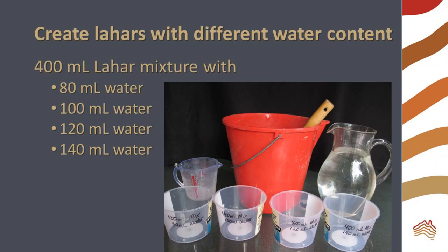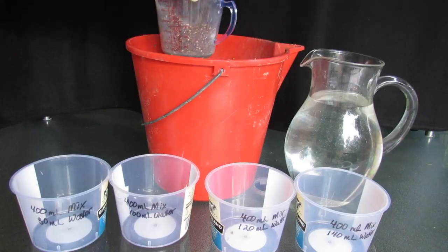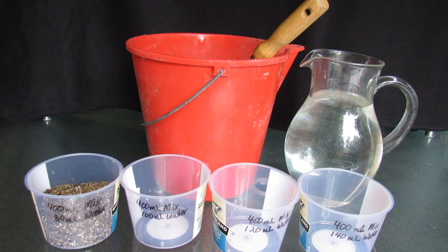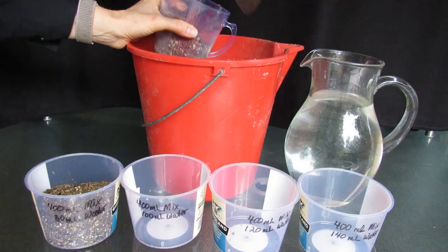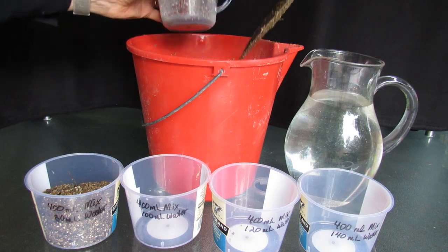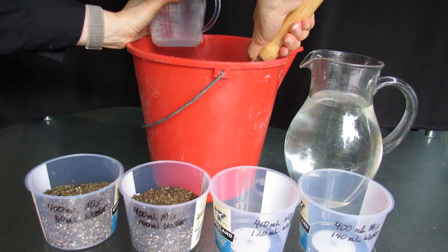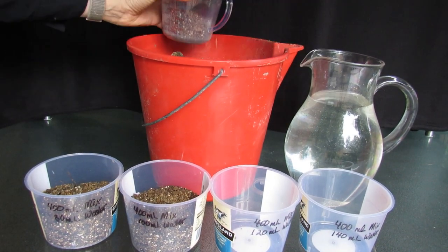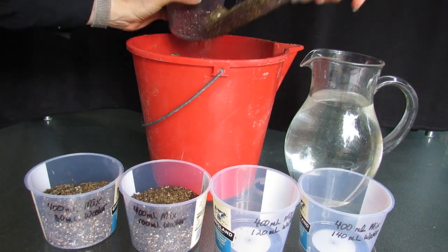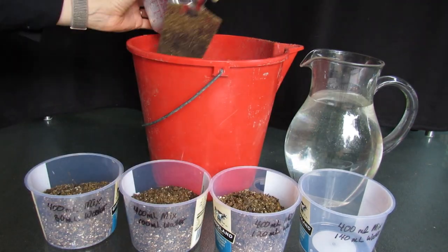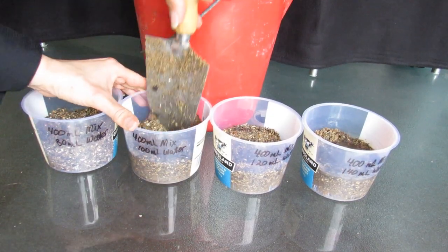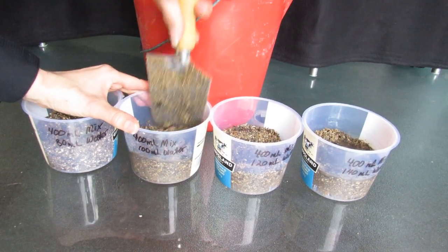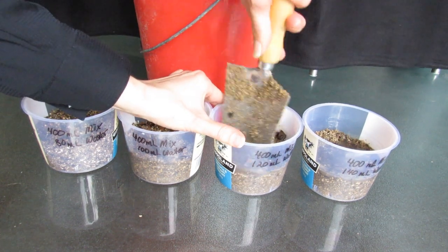Pour 400 mils of lahar mixture into each container, then add the desired amount of water. I'm adding 80, 100, 120, and 140 mils of water. Stir the mixtures with a trowel or stick and break up any chunks of soil.